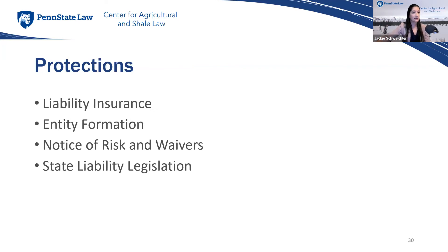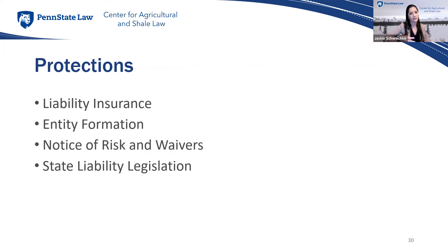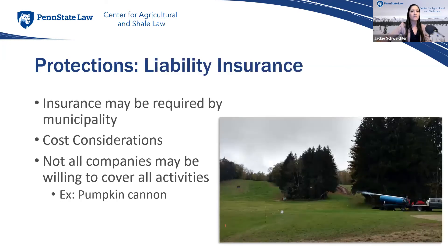You can never completely protect yourself from being sued, but there are steps to mitigate potential problems. The main protections to consider are: liability insurance, entity formation, state liability legislation, and — depending on the state — notice of risk and waivers. If you want to protect yourself from a liability lawsuit, the first thing to look into is liability insurance.